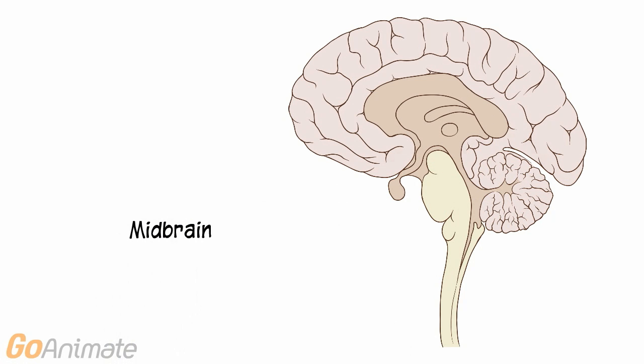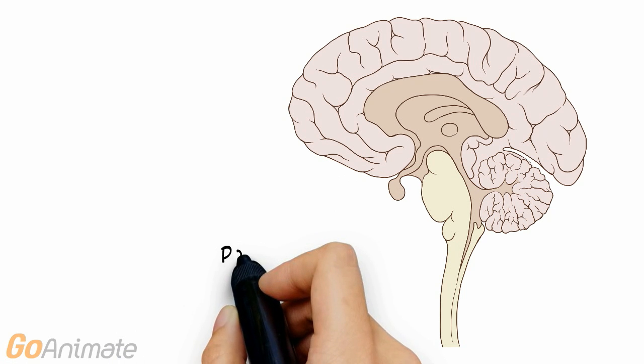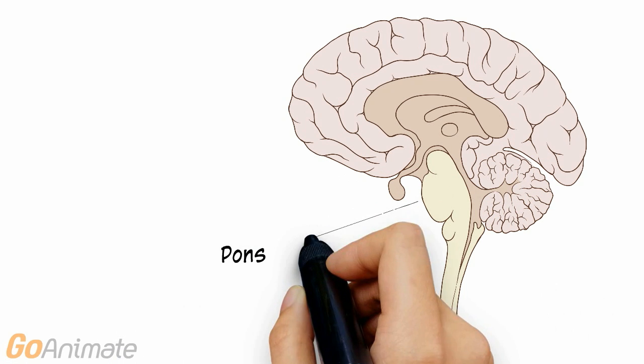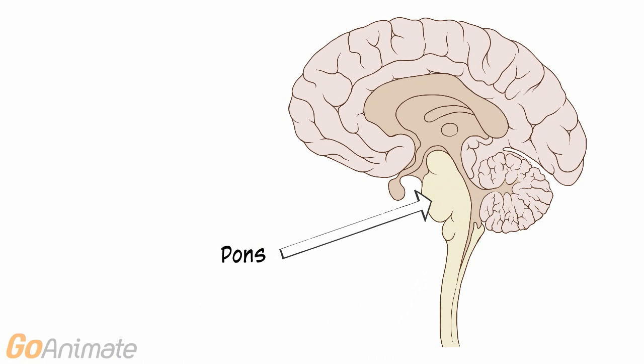Let's look at the brainstem in more detail. The midbrain contains the superior and inferior colliculi, which are involved in controlling movements of the head towards stimuli as well as hearing. The pons contains respiratory centers and is involved in regulating sleep.